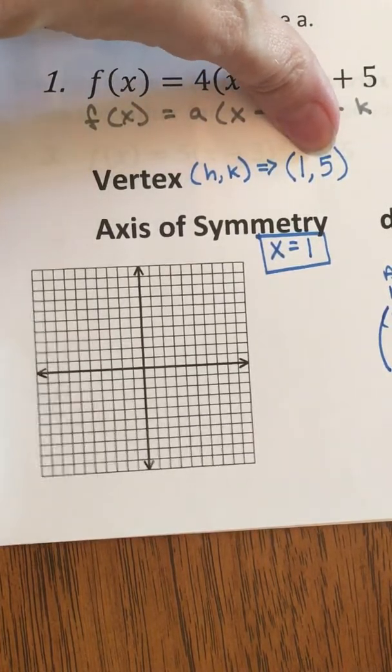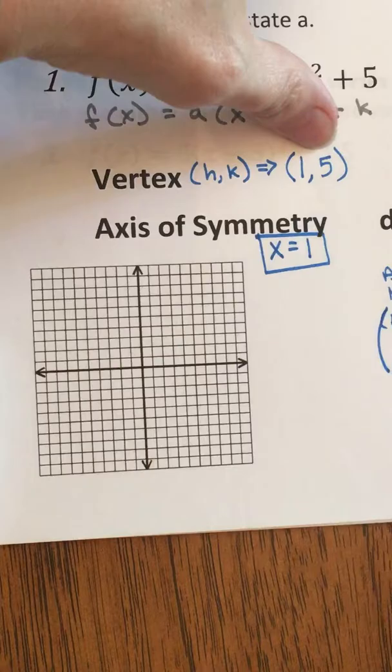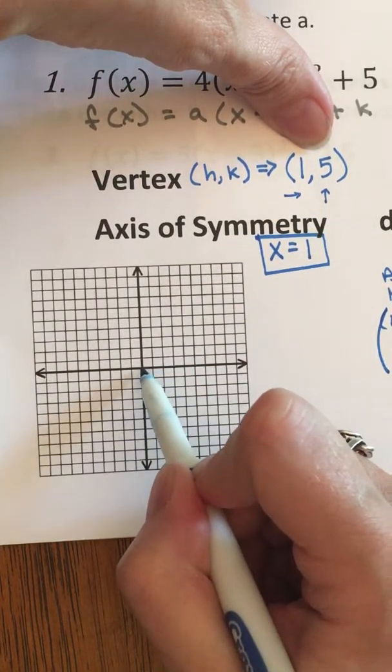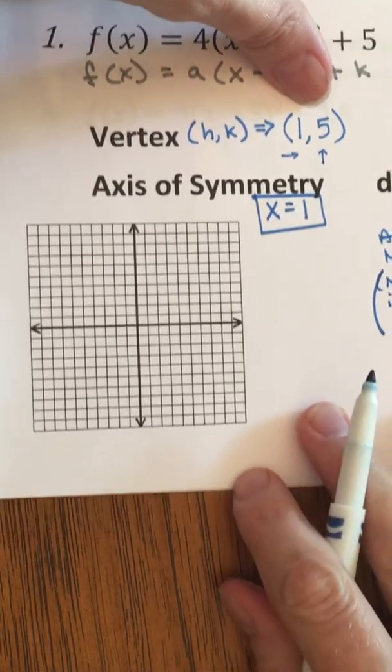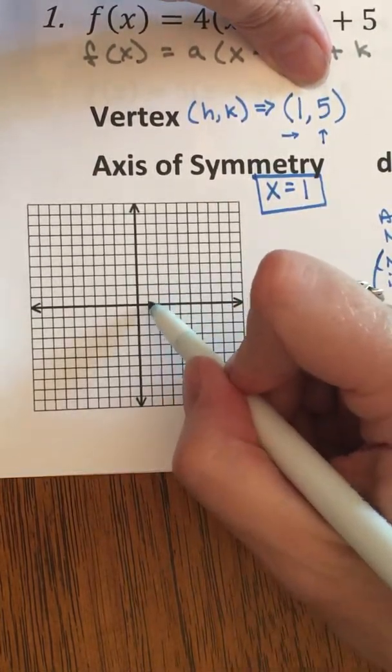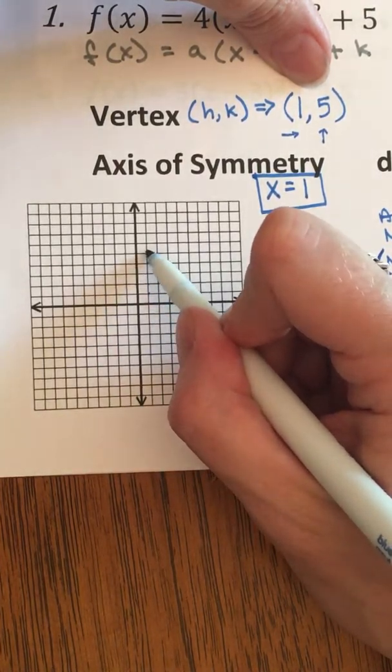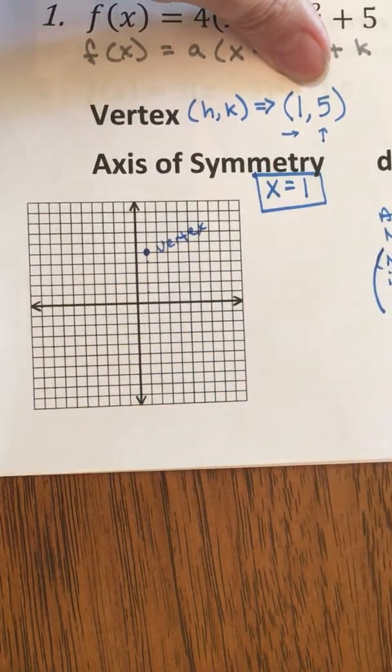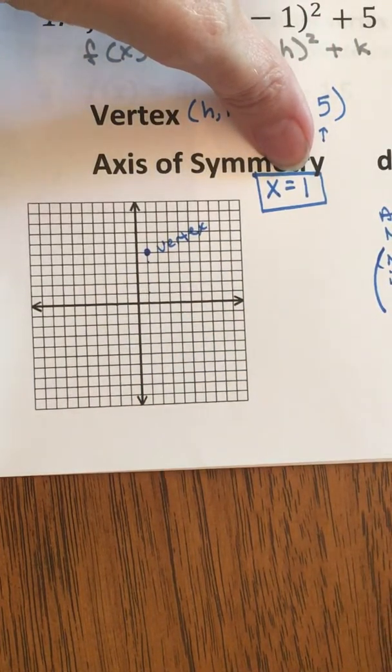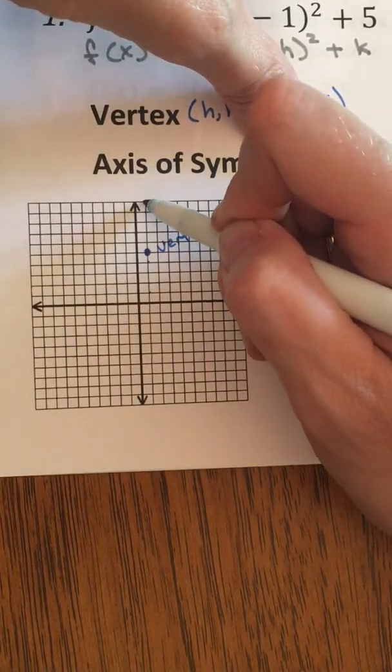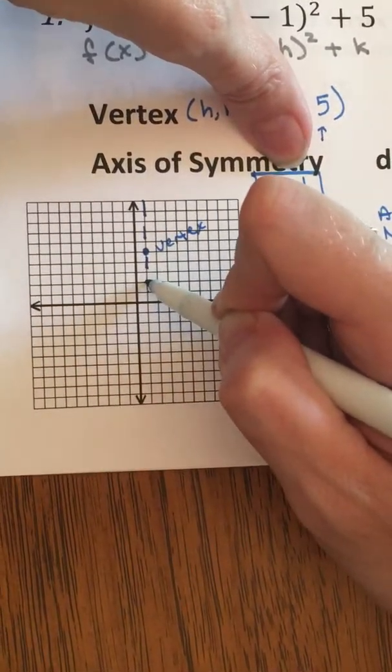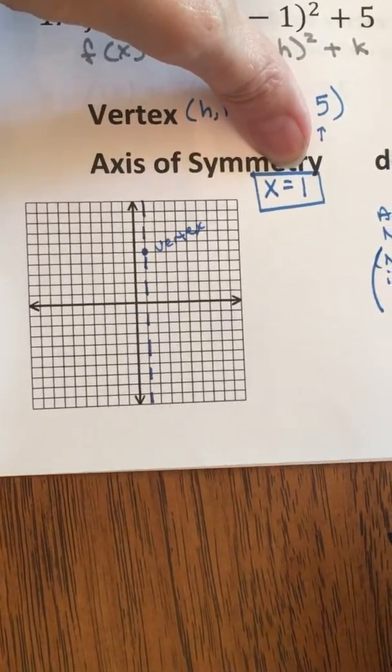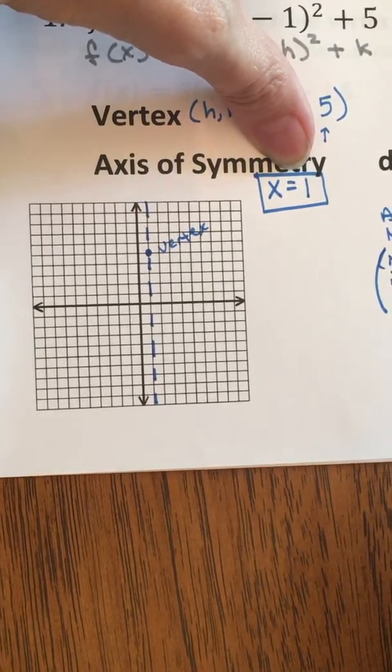My vertex is at the coordinate point 1, 5. So, let's go to the right, 1 unit, up 5 units, right 1 from the center, from the origin, up 1, 2, 3, 4, 5. There's my vertex. Here's my axis of symmetry. X equals 1. It goes straight through my vertex and down through the entire graph. I know this is going to open upward, so we could go grab our calculator and find out exactly what our table is to help us out.